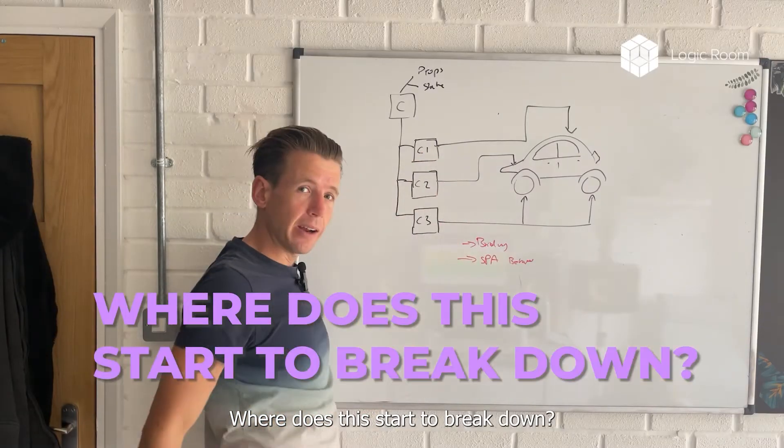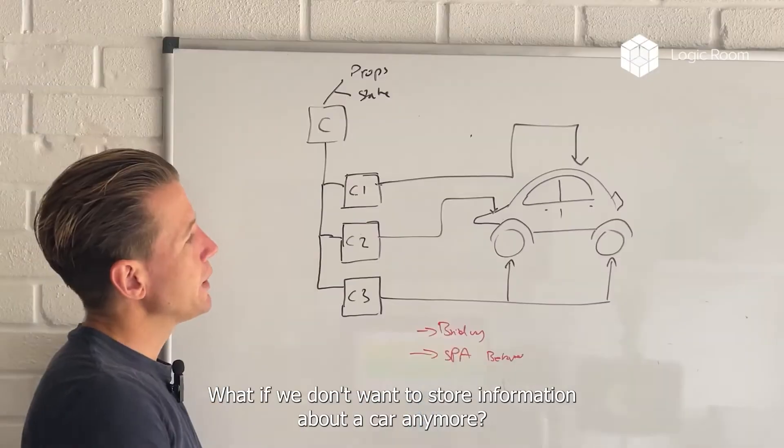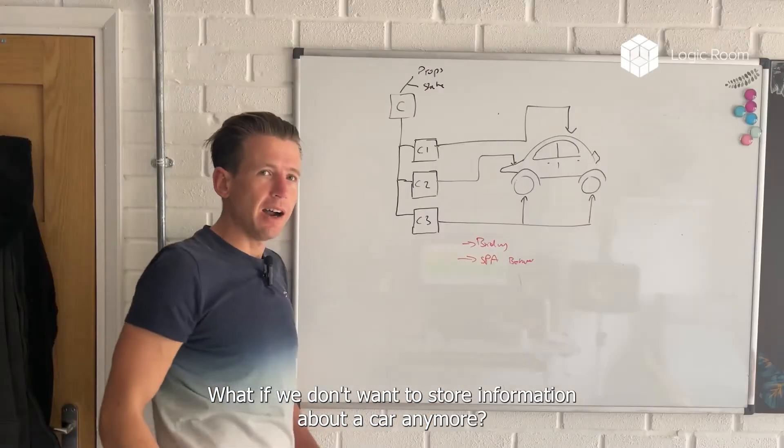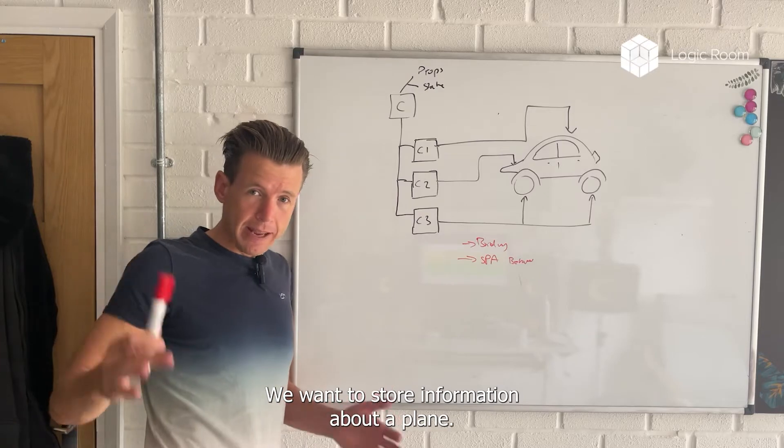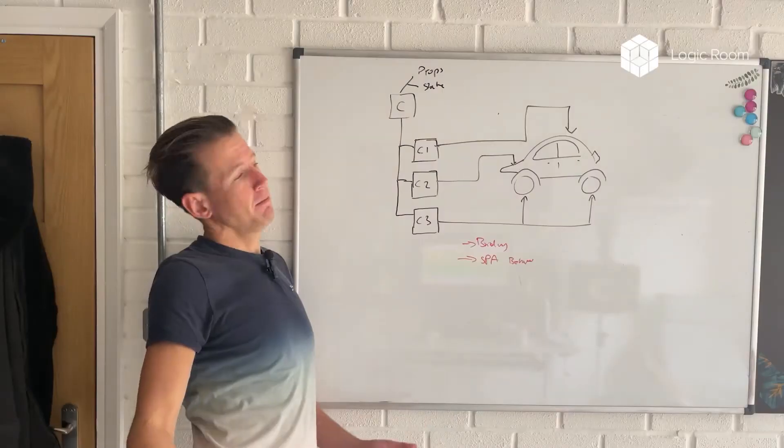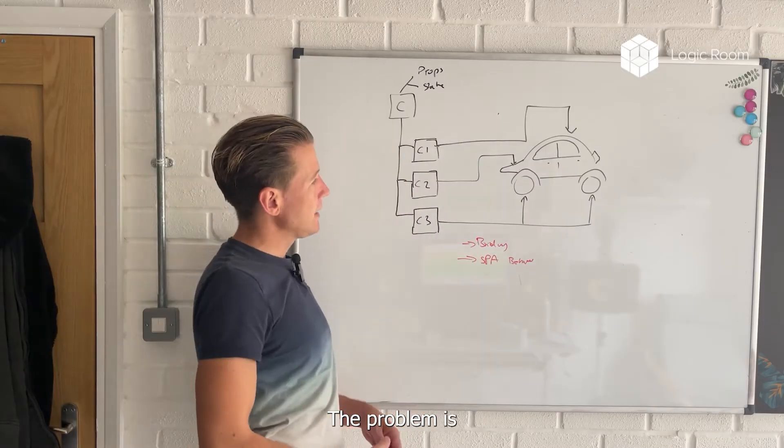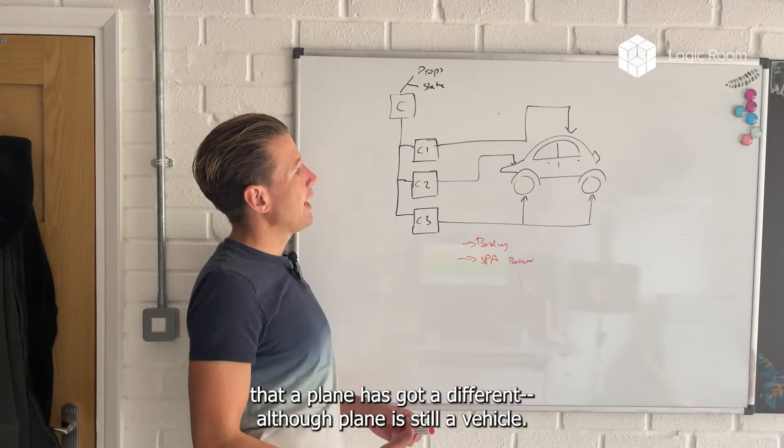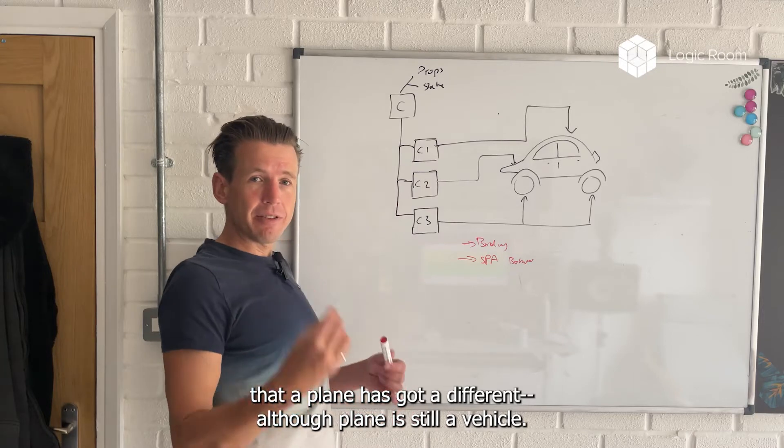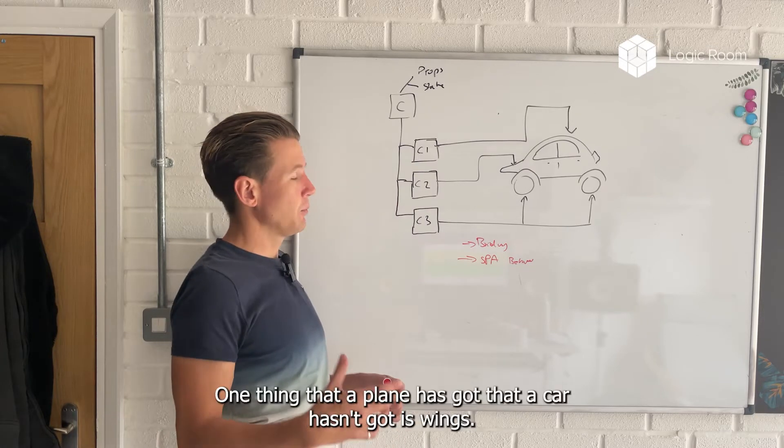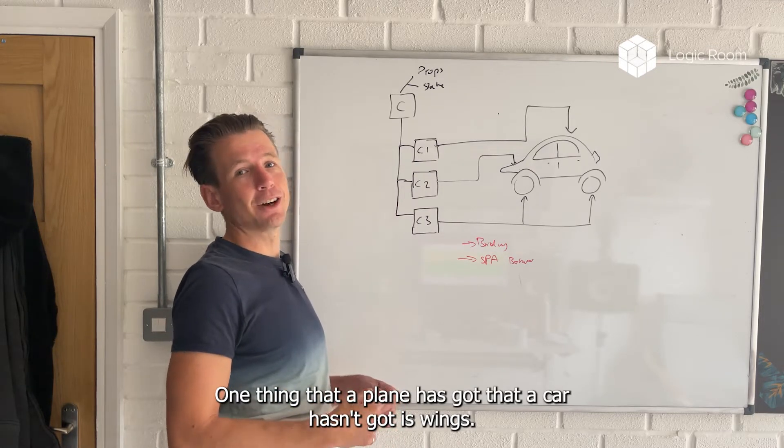But let me ask you a question. Where does this start to break down? What if we don't want to store information about a car anymore? We want to store information about a plane, right? Can you see the problem?